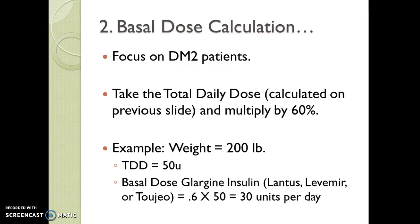For type 2, we take their total daily dose and multiply it by 60%. For example, we have an adult weighing 200 pounds. The total daily dose for that person is 50 units — that's 200 divided by 4. Their basal dose of glargine insulin, such as Lantus, Levemir, or Tujeo, is 60%, or 0.6 times 50, which equals 30 units per day. That's their basal insulin need — 60% of their total daily dose.